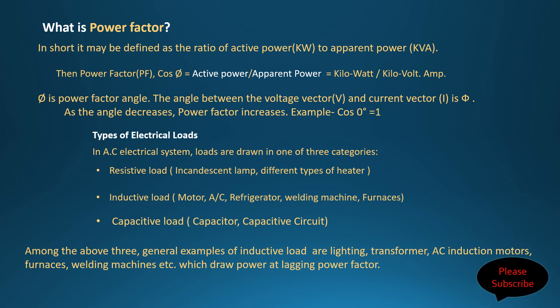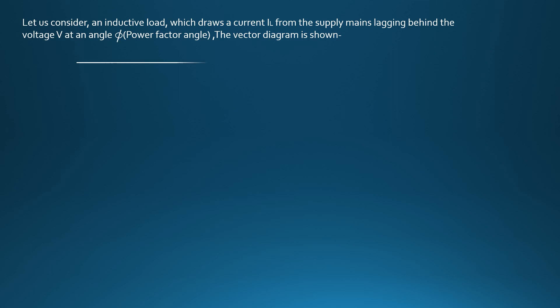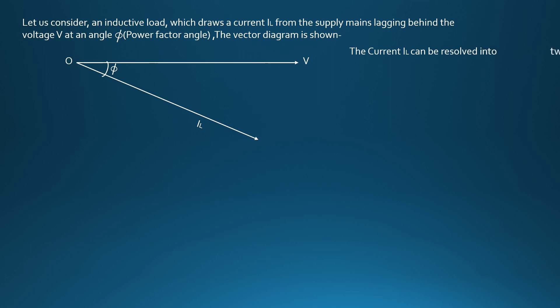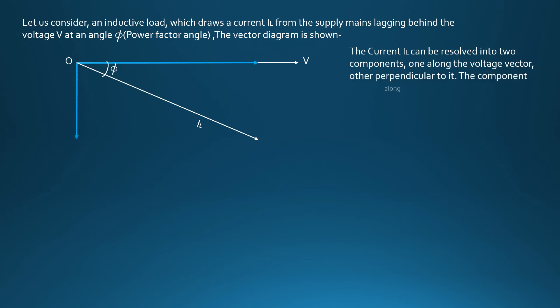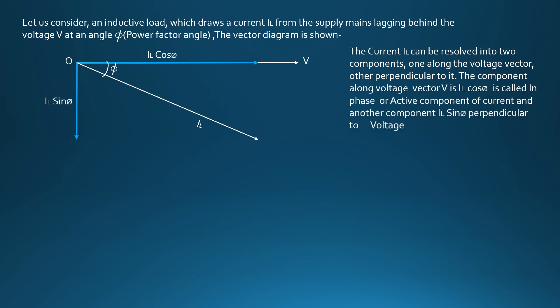We need to go through vector representation of different types of loads to define what is power factor and how it can be improved or corrected. Consider an inductive load which draws current IL from the supply, lagging behind the voltage V at an angle phi — the power factor angle. The current IL can be resolved into two components: one along the voltage vector, and the other perpendicular to it. The component along voltage vector V, which is IL cos phi, is called the in-phase or active component of current. The other component, IL sin phi, perpendicular to voltage vector V, is called the out-of-phase or reactive component of current.